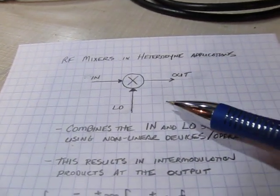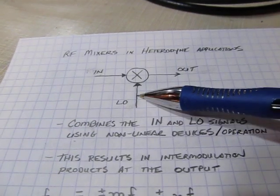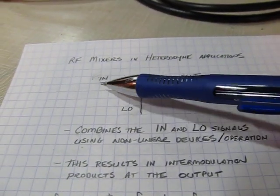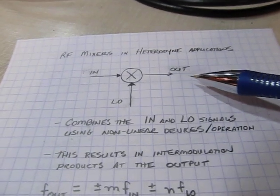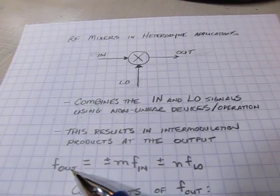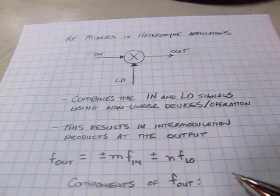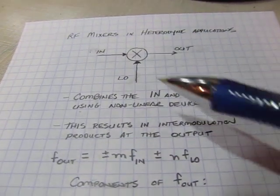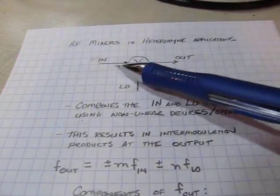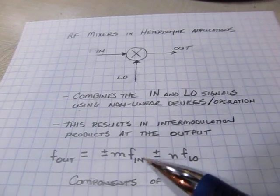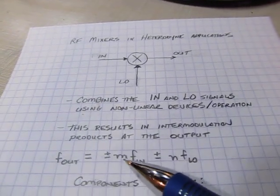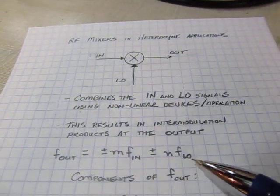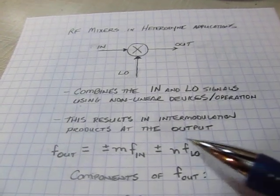So the way to think about that is, let's say we put a sinusoid in the LO and a sinusoid into the input, what would be present at the output? The output frequencies are really going to be a whole series of different frequencies. You may get a copy of the input signal and the output signal, but you'll also get some difference products of integer multiples of the frequencies of the two input signals.